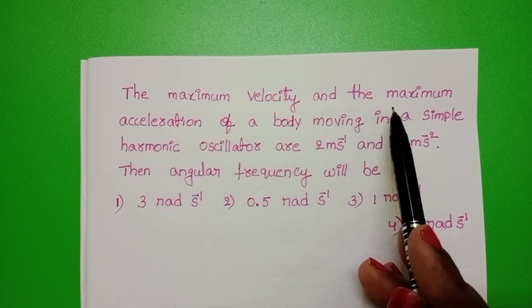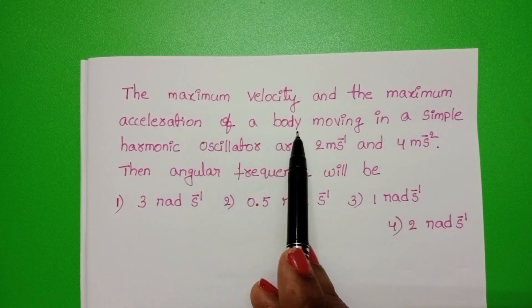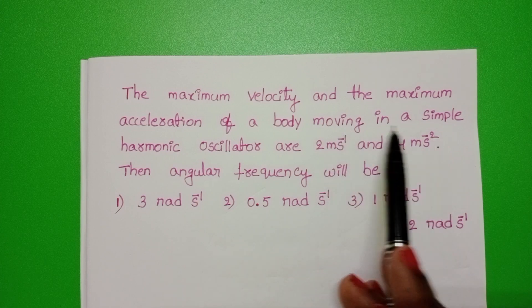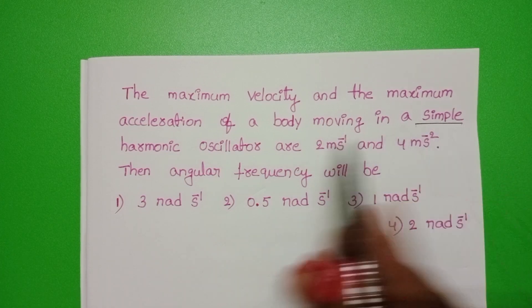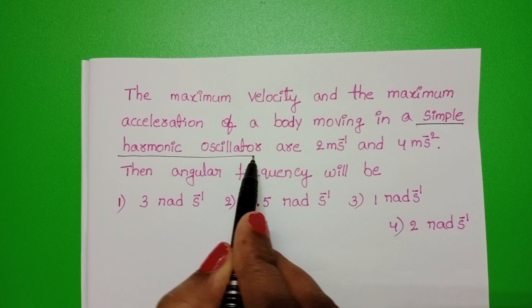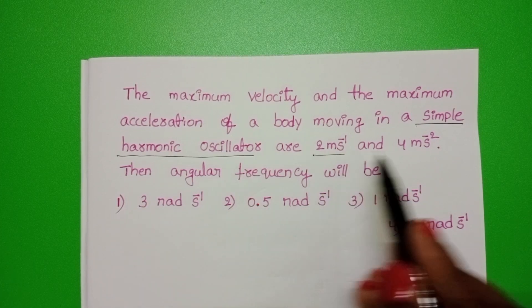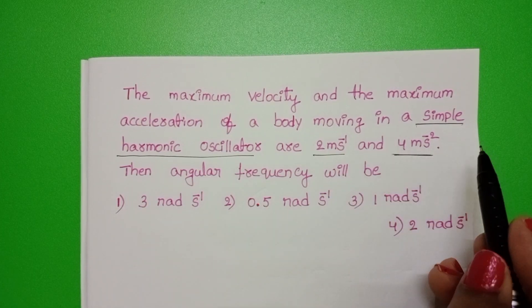The maximum velocity and the maximum acceleration of a body moving in a simple harmonic oscillator are 2 meter per second and 4 meter per second square.